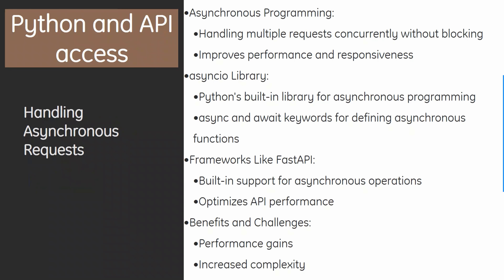Moving on, we have handling asynchronous requests. Asynchronous programming allows handling multiple requests concurrently without blocking, improving performance and responsiveness. Python's asyncio library supports asynchronous programming, using async and await keywords for defining asynchronous functions. Frameworks like FastAPI have built-in support for asynchronous operations, optimizing API performance, though benefits include scalability with increased complexity as a challenge.